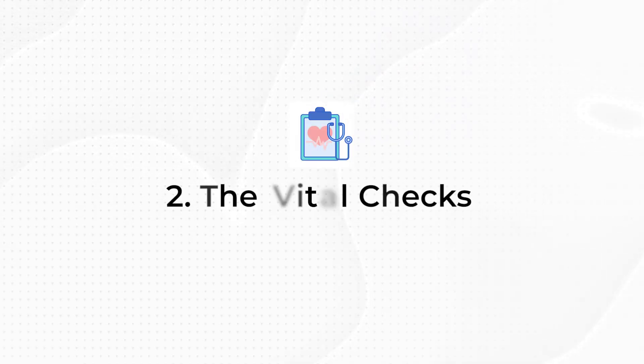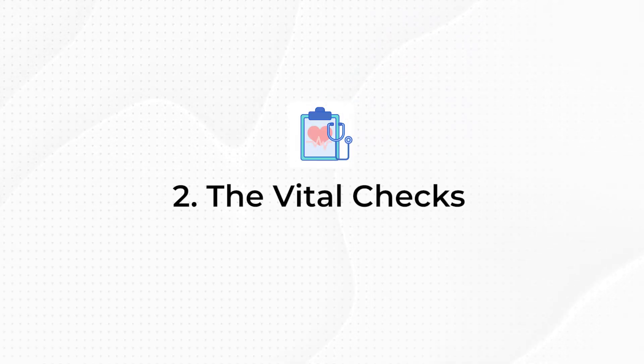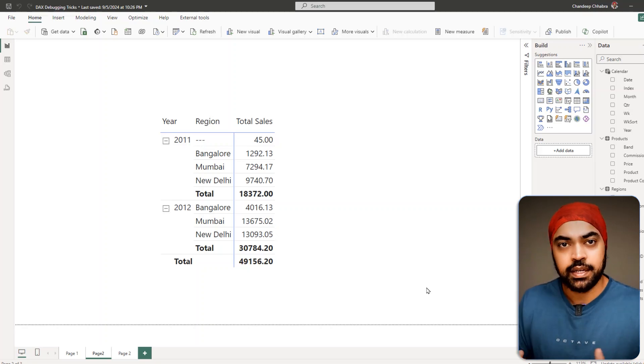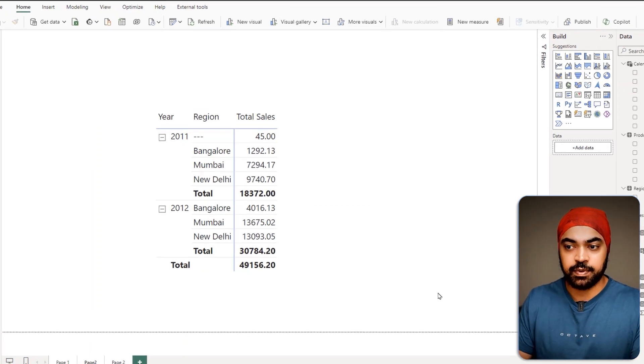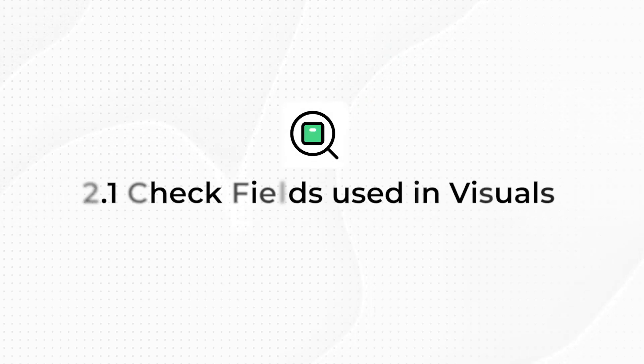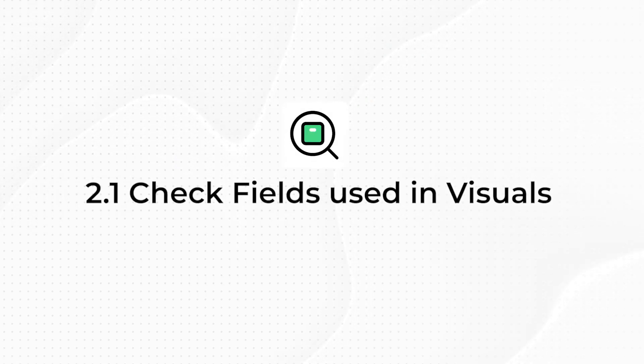Remember: measures should return single values, and tables should evaluate as tables. If you're creating a table it should return a table; if you're creating a measure it should return a single value. Moving on to point number two — some vital checks you should perform if your DAX calculations are not performing as expected.